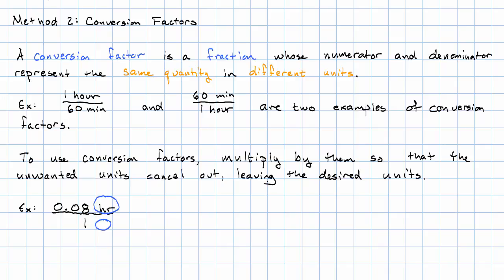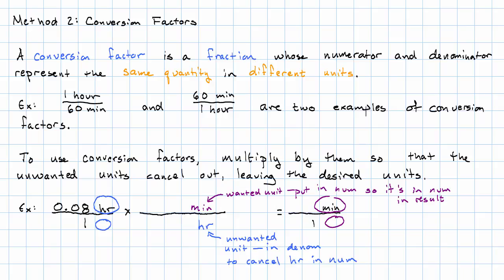So in our original unit, we have hours in the numerator and nothing in the denominator. Our goal is to have an answer in minutes and nothing in the denominator. So when we go to multiply, we want to put hours in the denominator so that it cancels out the hours in the numerator we already have. And we want to put minutes in the numerator. Notice that the two units that we put here, hours and minutes, measure the same kind of thing, namely time.